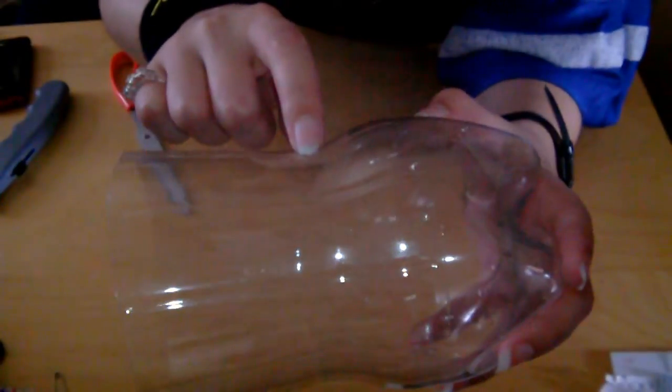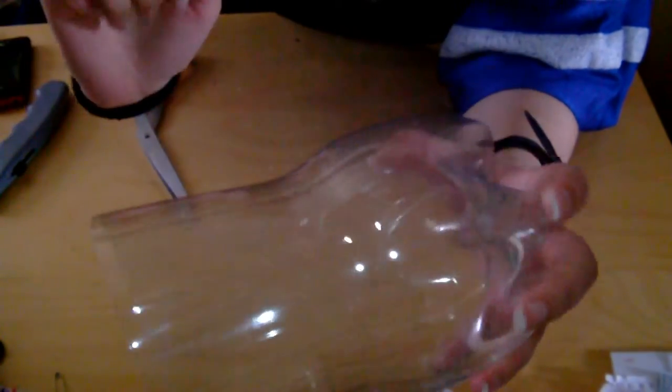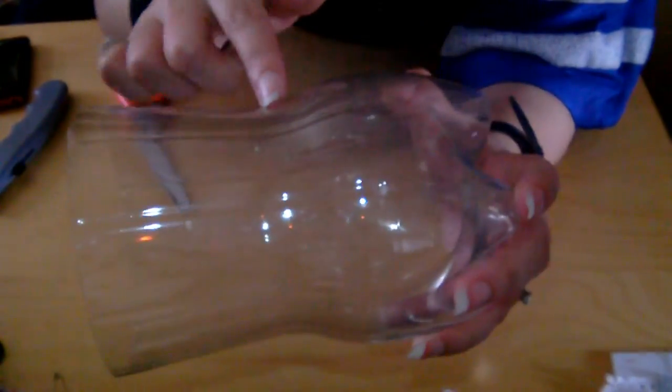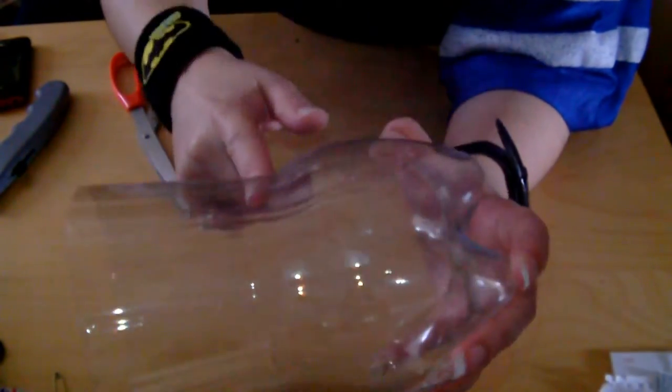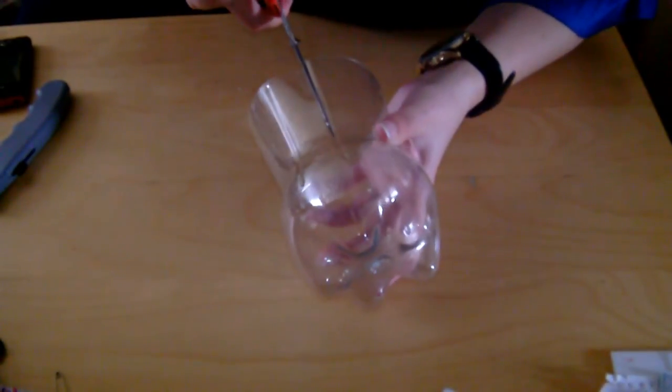We're going to cut down each of the lines until we get to the bend in the bottle. So you just want like straight across here where the bend is.